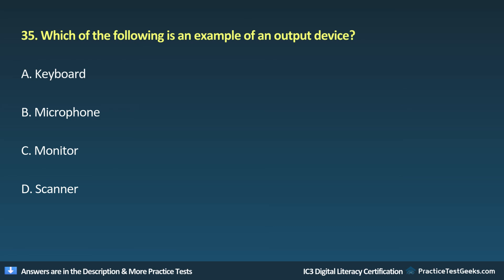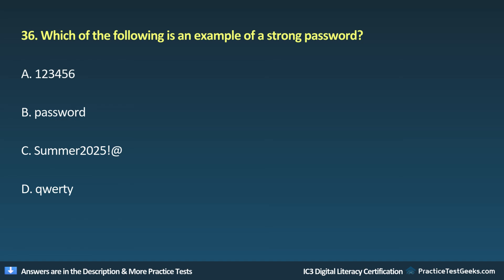Question 35: Which of the following is an example of an output device? A. Keyboard. B. Microphone. C. Monitor. D. Scanner.